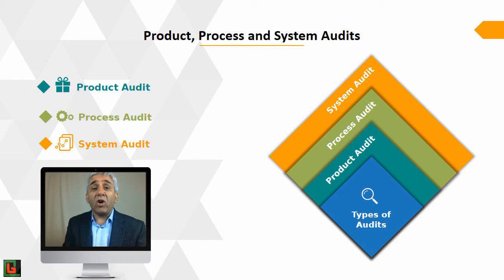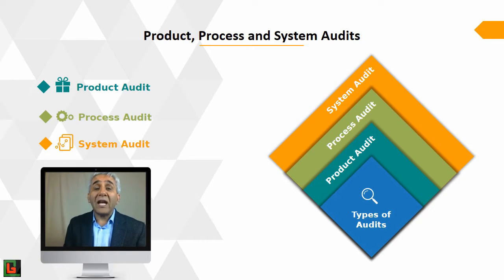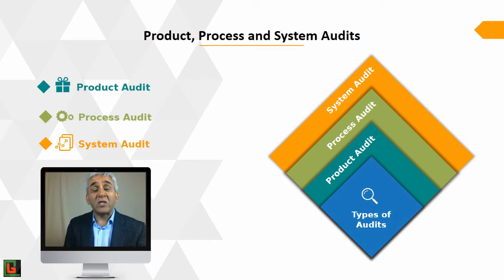The product audit is focusing on the end product. The process audit, on the other hand, looks at a specific process — the process which is being reviewed and audited. And the system audit is the overall audit of the whole system.